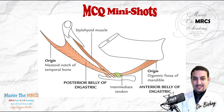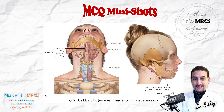The anterior belly originates from the digastric fossa of the mandible. The mastoid notch of the temporal bone is not the insertion — it is the origin of the posterior belly. These are the two separate origins of the digastric muscle.